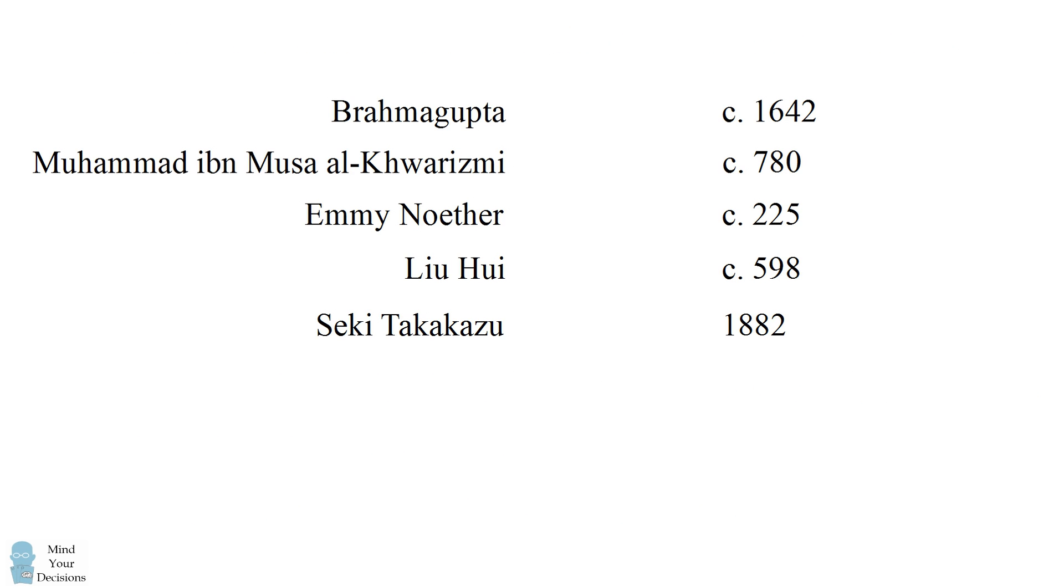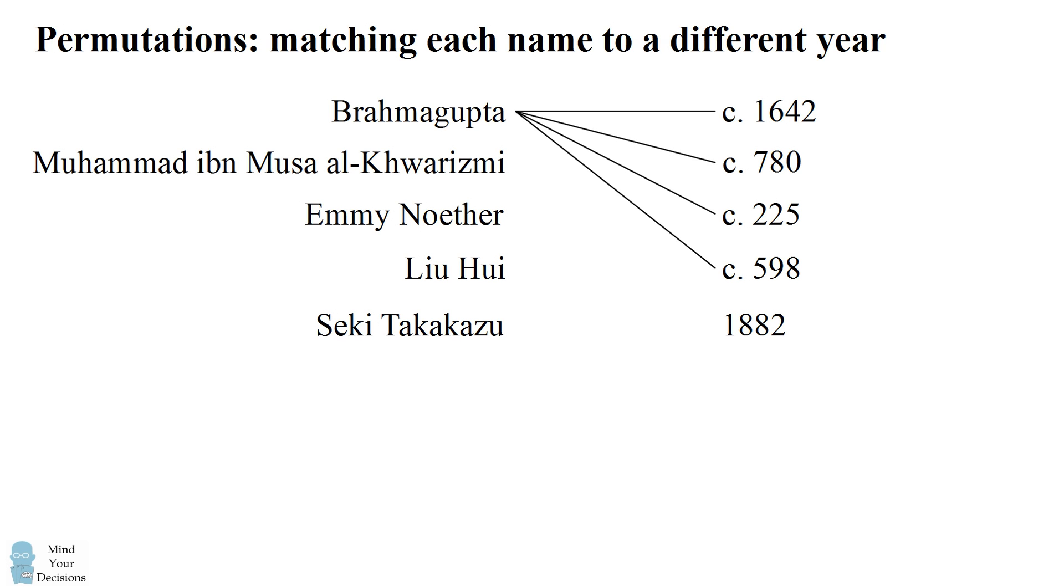So before I solve this problem, I'm going to go over the question of how many different ways are there to guess on this test. Now many people would guess what's known as a permutation. This is where you match each name to a different year. So how many different permutations of five things are there? Or how many different ways are there to match each name to a different year? Let's start counting.